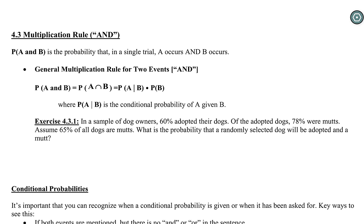The last video talked about how to calculate OR probabilities. AND probabilities are a little trickier. In order to do an AND probability, we have this general multiplication rule. In order to find the probability of A and B, we're going to multiply the probability of A given B — that conditional probability — times the probability of event B.